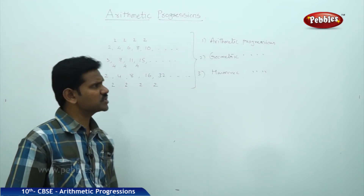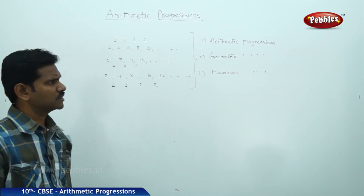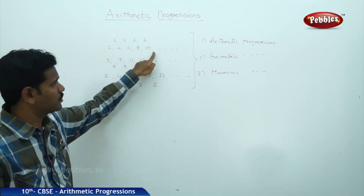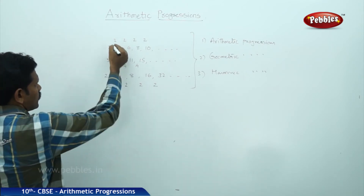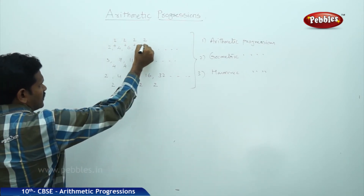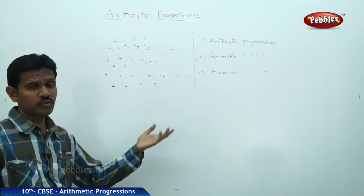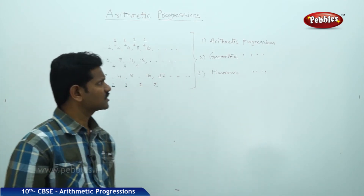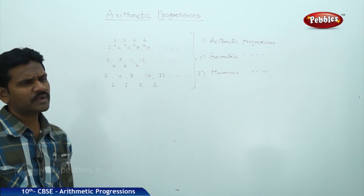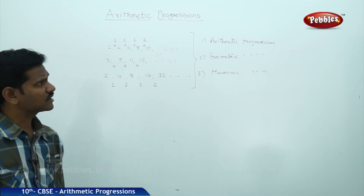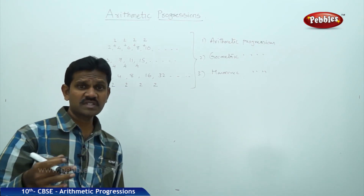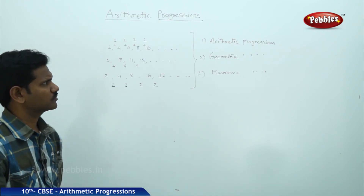Arithmetic progression is the progression in which every term is obtained by adding a fixed number to its preceding number — such a sequence is called an arithmetic progression. In arithmetic progression, we can add a fixed number or we can subtract a fixed number.